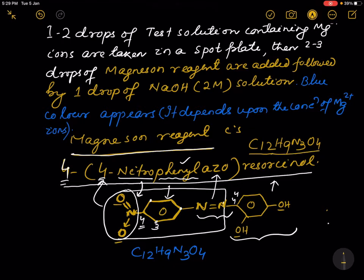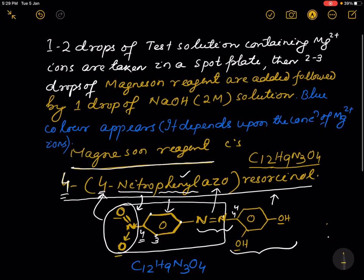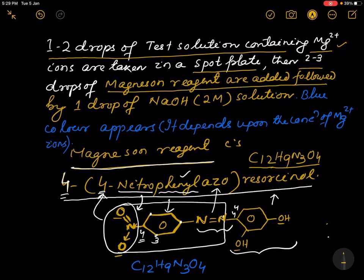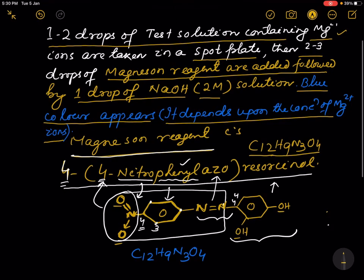This reagent is used to detect the presence of Mg2+ ions in solution. Let us take 1 to 2 drops of test solution containing Mg2+ ions in a spot plate. Then 2 to 3 drops of magnesium reagent are added, followed by 1 drop of sodium hydroxide (2 M concentration). Then blue color appears. Magnesium reagent is used to detect the presence of Mg2+ ions in solution. Thank you.